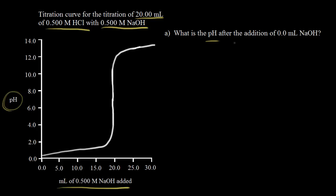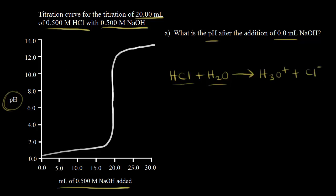In part A, our goal is to find the pH before we've added any sodium hydroxide — at the addition of 0.0 mLs of base. If we haven't added any base, the only thing we have present is acid. We know that HCl is a strong acid, so it ionizes 100%. If HCl donates a proton to H₂O, we get H₃O⁺ and the conjugate base Cl⁻. Starting with 0.500 molar HCl and 100% ionization, we have 0.500 molar for the concentration of hydronium ions.